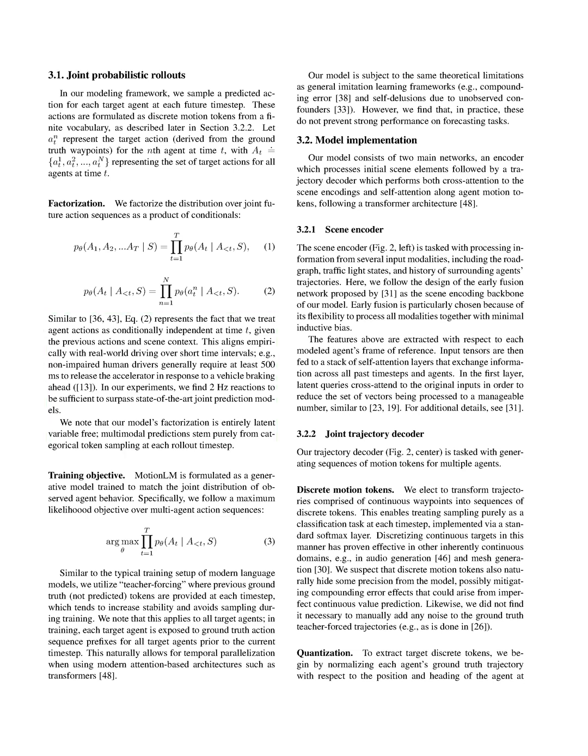Section Summary: The paper discusses autoregressive trajectory prediction, which involves generating multi-agent trajectories that are consistent with the scene. Unlike other methods, this approach directly samples from a learned distribution of discrete motion token sequences, without relying on latent variables or beam search. The model also takes into account temporal dependencies and factors the distribution over joint future action sequences as a product of conditionals.